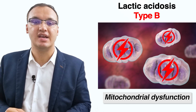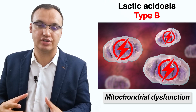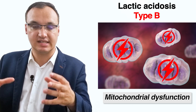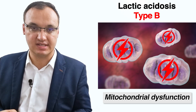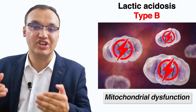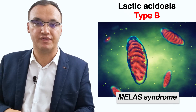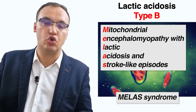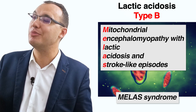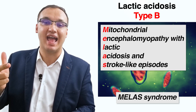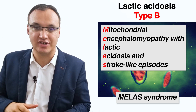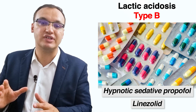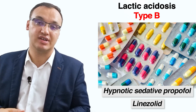Another cause of type B lactic acidosis is mitochondrial dysfunction, especially seen in congenital or acquired mitochondrial defects. These defects impair normal energy-producing processes in the cells but may instead generate lactic acidosis. An example is MELAS syndrome — mitochondrial encephalomyopathy with lactic acidosis and stroke-like episodes. Mitochondrial dysfunction can also be caused by medicines such as the hypnotic sedative propofol and the anti-diabetic medication linezolid.